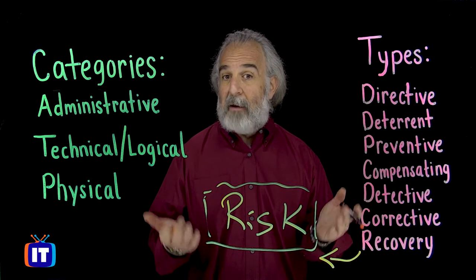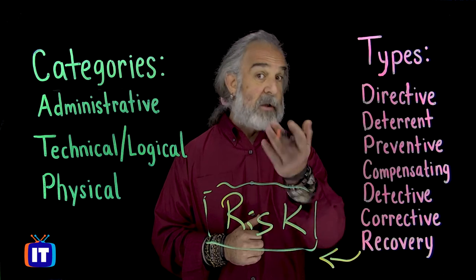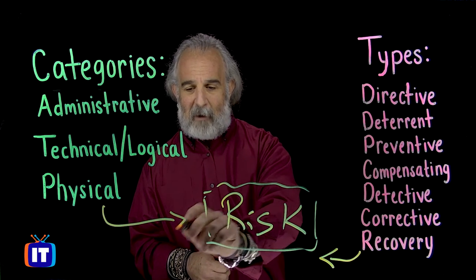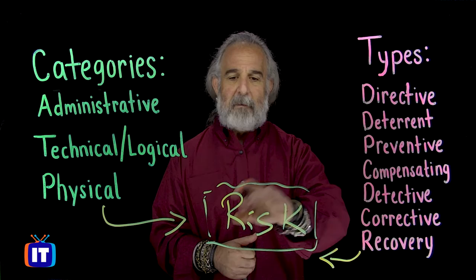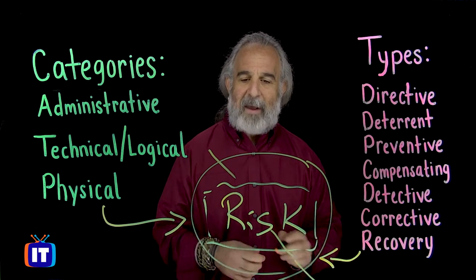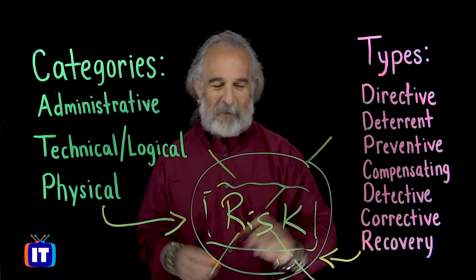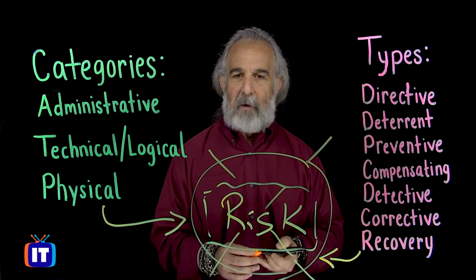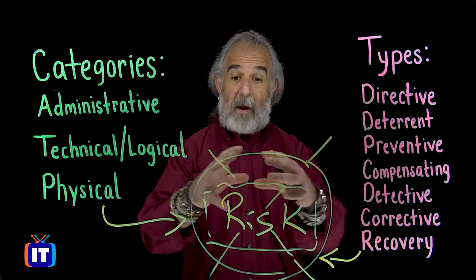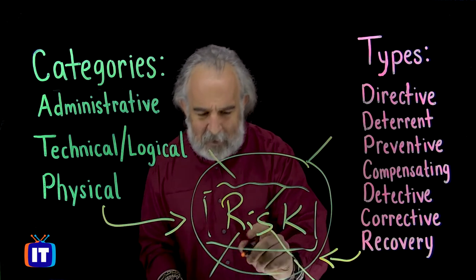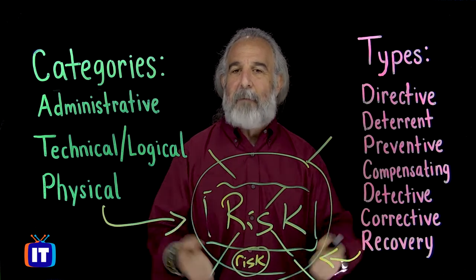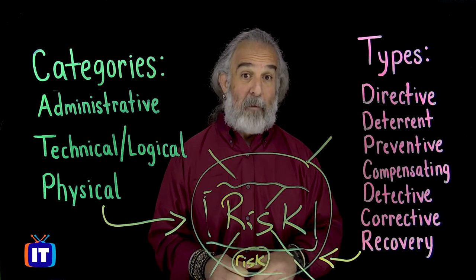Why do we want to use controls? Why are they valuable to an organization and to you as an individual? They give us the ability to try to get rid of risk, if at all possible. The reality is we're never going to completely eliminate risk — there will always be some left — but we can certainly shrink that circle, minimize it, so that it's a lot less impactful to us. Controls are going to really help us get to that point.